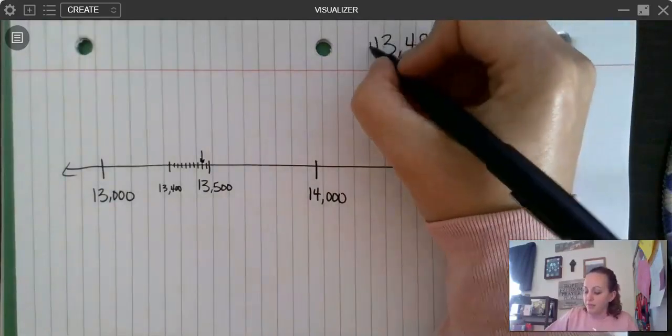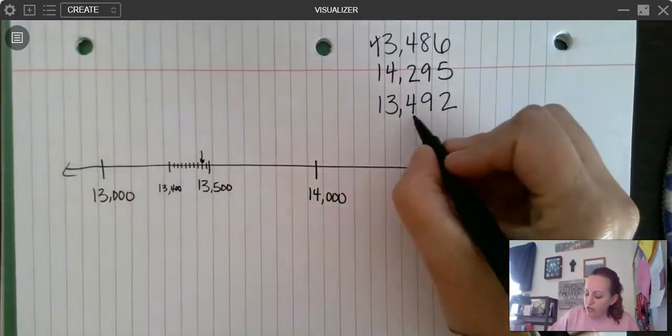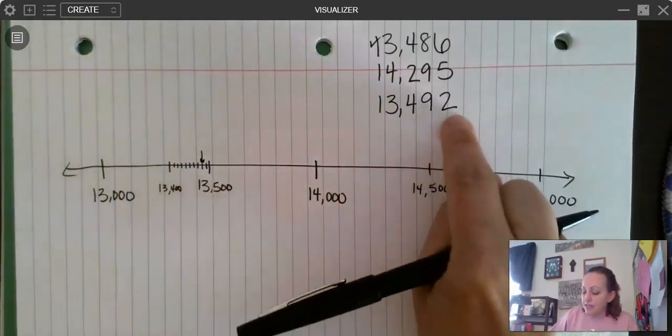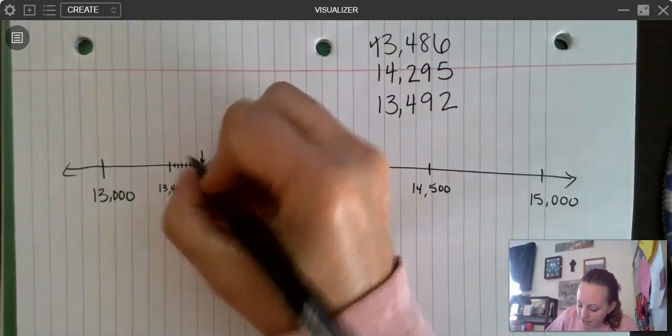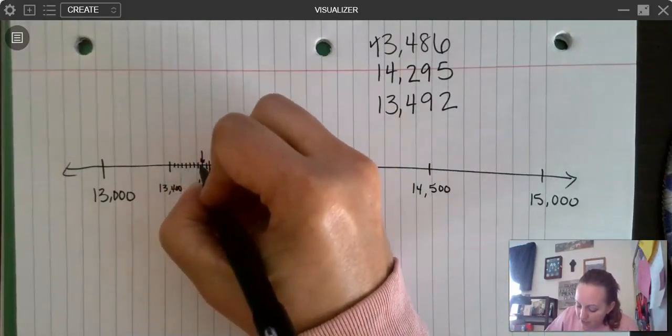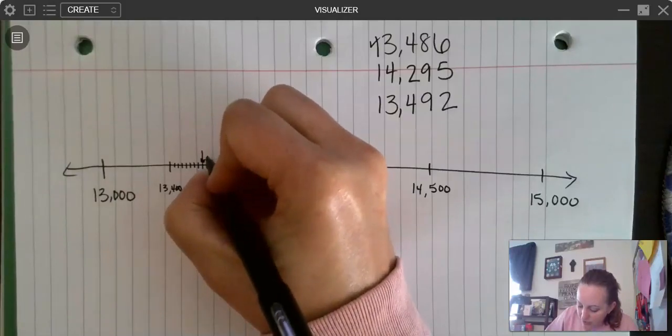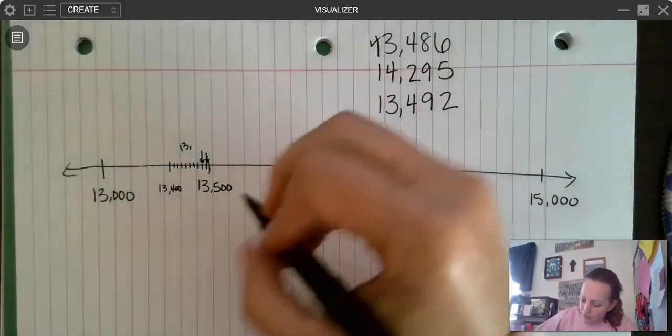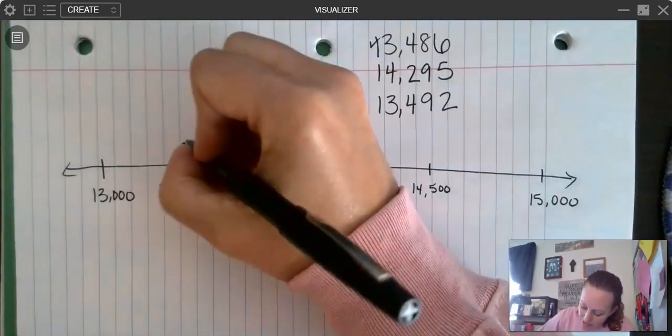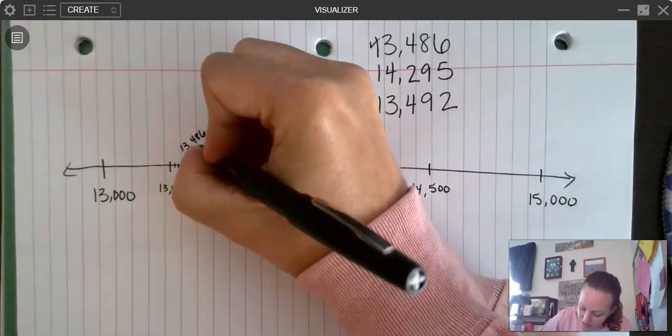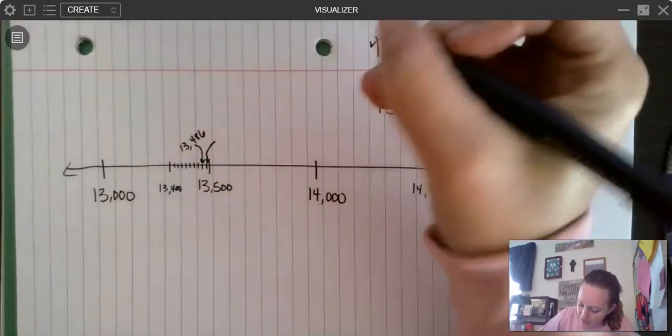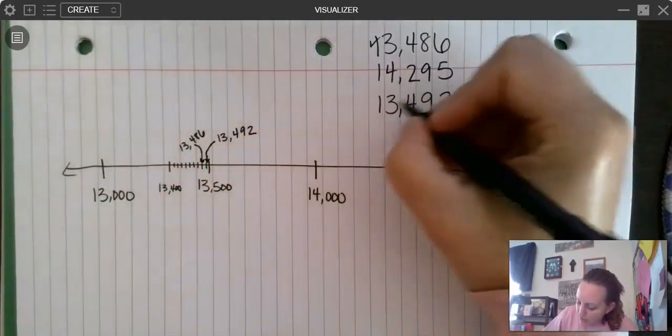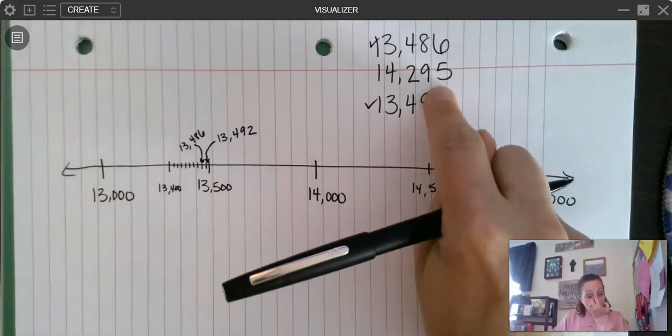13,492. So it's still in this same section, right? But this one is 92. So 90 would be 10, 20, 30, 40, 50, 60, 70, 80, 90, two. Okay. So this one is 13,000. If I could write sideways pretty well, I would. That would be a little bit better way to write this. 486 goes there. This one is 13,492. Okay. So I got that one.